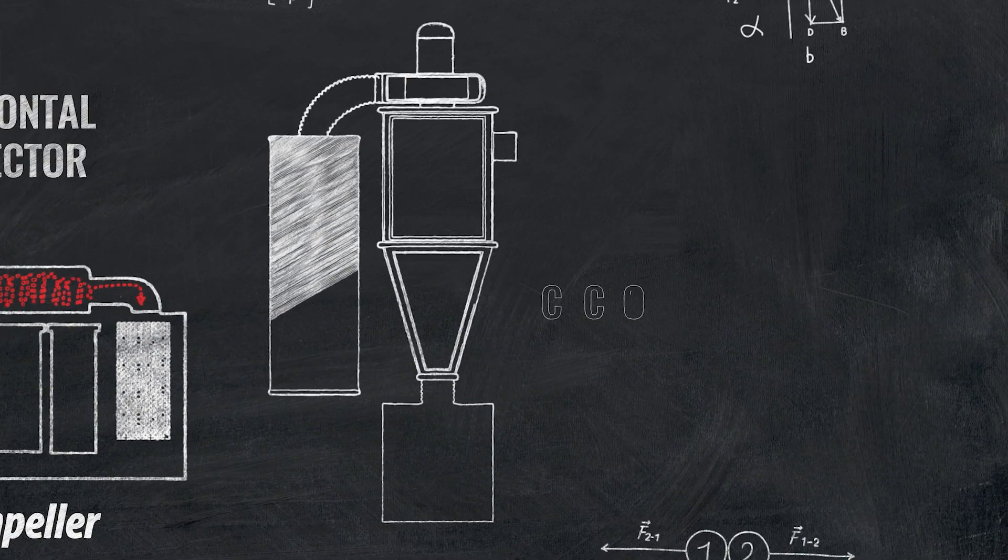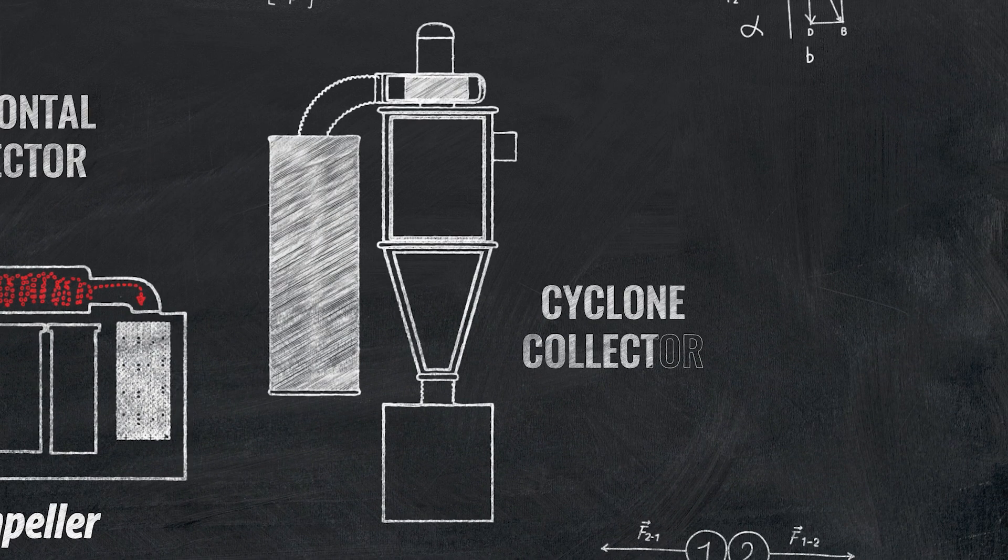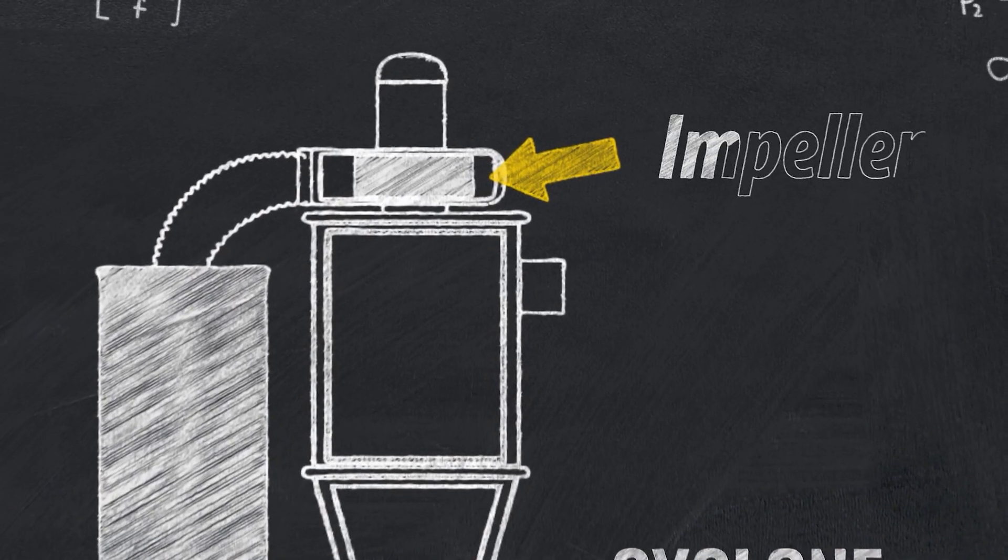In contrast, Oneida Air's vertically-oriented cyclone collectors are designed to separate larger, heavier debris from the airstream before reaching the impeller.